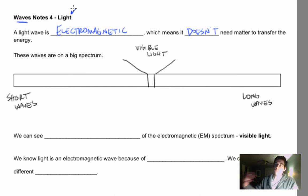If they weren't electromagnetic, the sun's light and energy would never make it to the earth because space is a vacuum. And electromagnetic waves, or EM waves, are on this big spectrum, and we're going to fill this in.